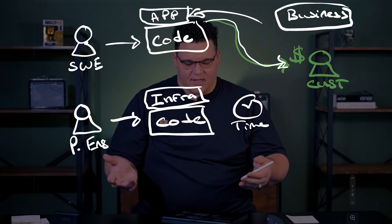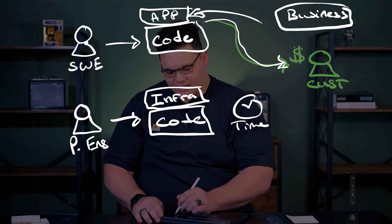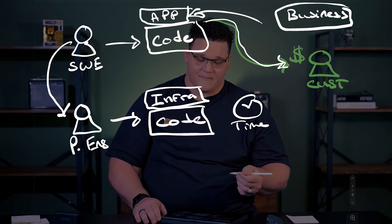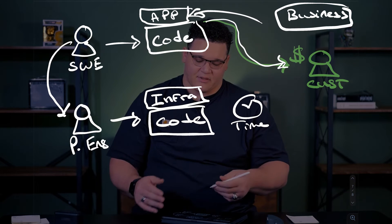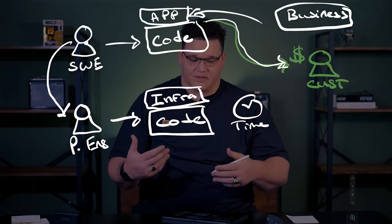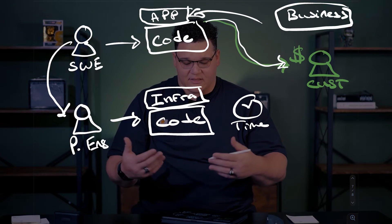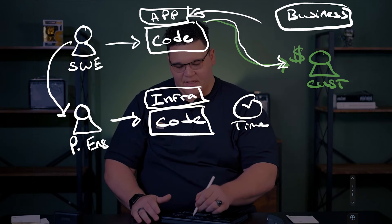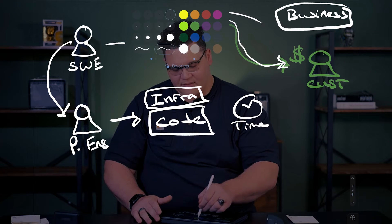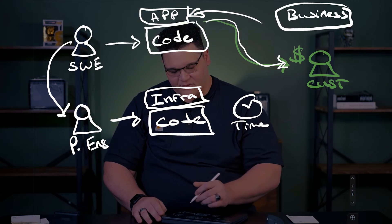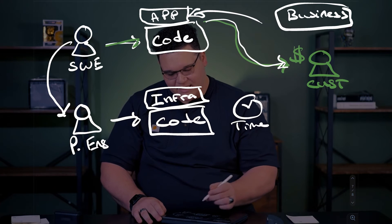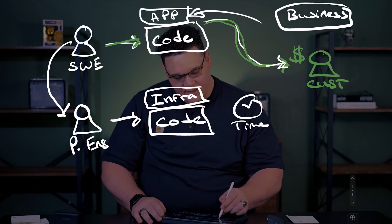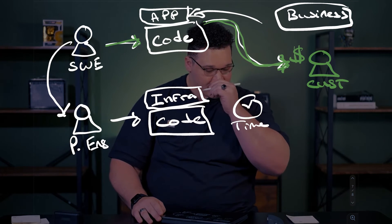The software engineer is kind of the customer of the platform engineer. The platform engineer builds this platform and the software engineer consumes this platform, which is composed of automated infrastructure. And then, because of that consumption, we're actually able to deploy our code and get our app all the way in front of our customer.